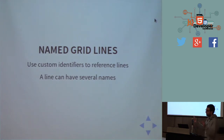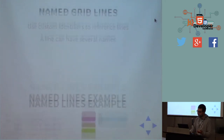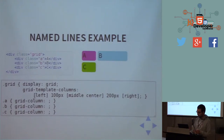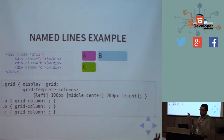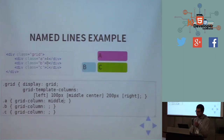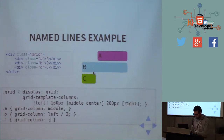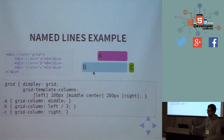Instead of using numbers for lines, we can use names. We can assign names to lines so it's easier to maintain the CSS. A line can have more than one name. For example, creating a grid with two columns: the first line is called `left`, the middle line is called both `middle` and `center`, and the third line is called `right`. So placing an element at `center` is the same as placing it at `middle`, or at index 2. We can also span from `left` to `right`, which is the same as from line 1 to line 3.